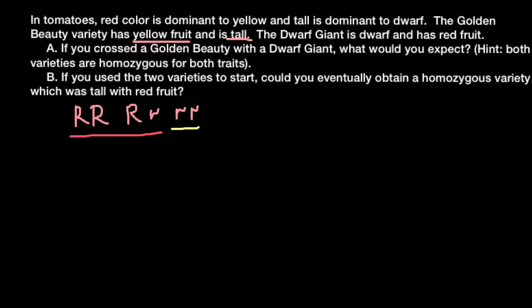The second trait is tallness. Again, we have two alleles and three genotype variants. TT would be a tall plant, Tt would also be tall, and tt would be the small or dwarf plant. So tt is dwarf, while TT and Tt are both tall.